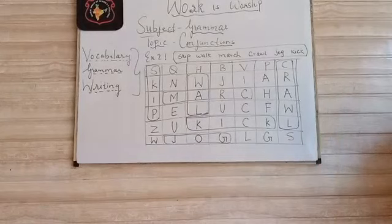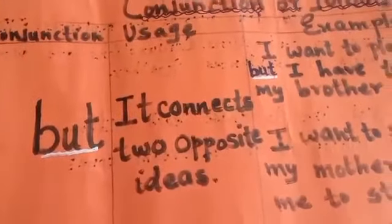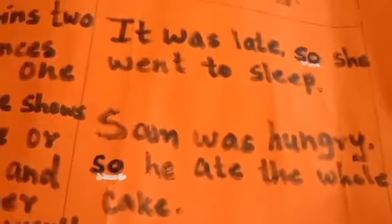Now we will see the table of conjunctions — let us learn two new conjunctions. First conjunction: 'but' — it connects two opposite ideas. Examples: 'I want to play now but I have to help my mother.' 'I want to sleep but my mother wants me to study.' Second conjunction: 'so' — it joins two sentences where one shows a cause or reason and the other shows the result. Examples: 'It was late so she went to sleep.' 'Sam was hungry so he ate the whole cake.'